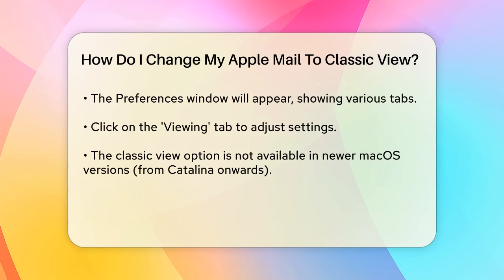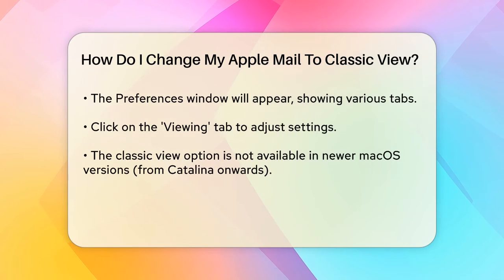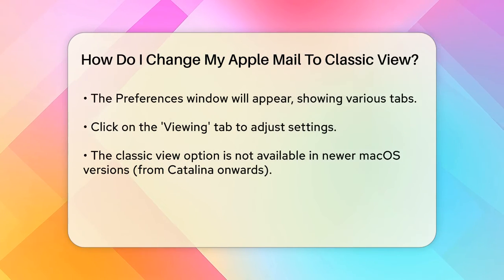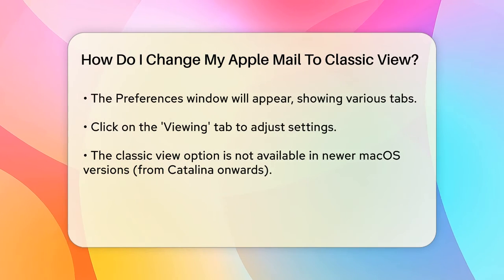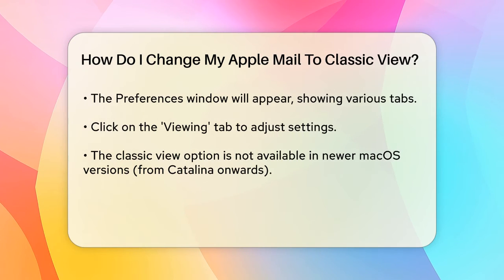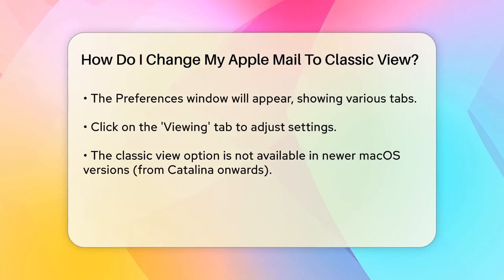In the Preferences window, you'll see several tabs. Click on the Viewing tab. But here's the important part: the option to switch to Classic View isn't directly available in newer versions of macOS, particularly from Catalina onwards. Instead, you need to adjust the layout settings to mimic the Classic View.